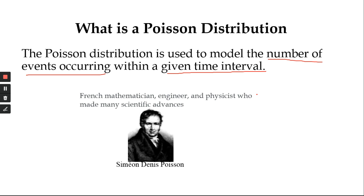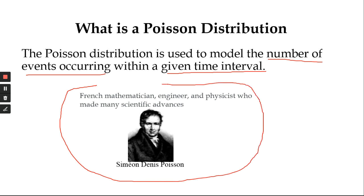The number of people arriving at a bank is a random variable. If you stand at a bank at any given hour, you will see that the number of arrivals keeps changing — in the first hour maybe 10 people arrive, in the next hour maybe 20, changing within a given time interval. The Poisson Distribution is attributed to the French mathematician, engineer and physicist Simeon Denis Poisson, and the name is given in his honor.